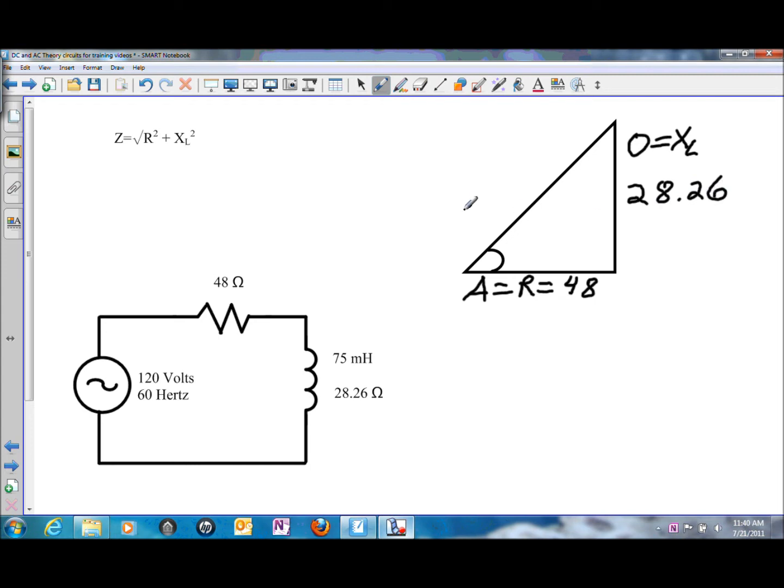And in order to solve for the hypotenuse, or Z in this case, which is impedance, we're going to use Pythagorean's theorem. Now Pythagorean's theorem is a squared plus b squared is equal to c squared, or the value of c, the hypotenuse, is equal to the square root of a squared plus b squared.